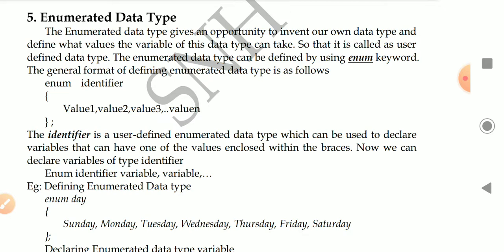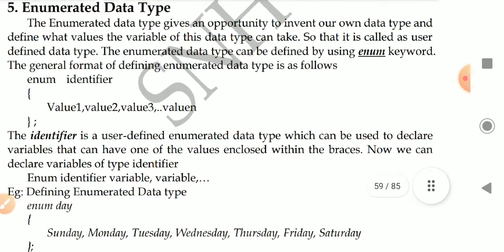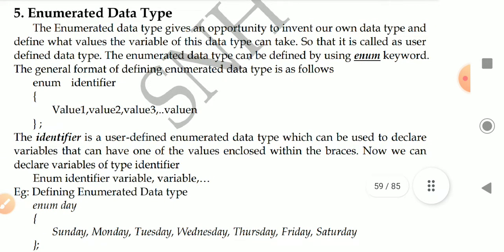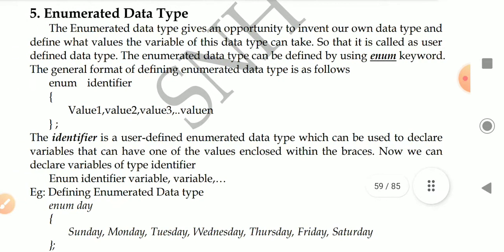Structure, union, and enum — these three are the user-defined data types. In the examination, if they ask you to explain user-defined data types in detail, you have to write about these three things. What is structure, how to define the structure, how to declare the structure variable; what is union, how to define the union, how to declare the union variable; what is enumerator, how to define the enum, and how to declare the enumerated variable.